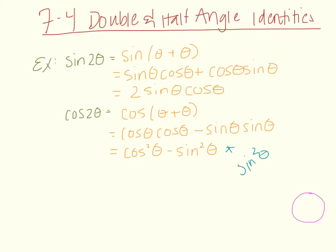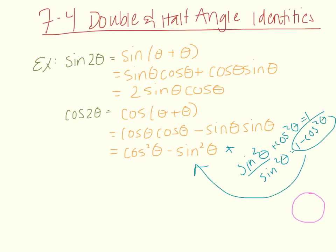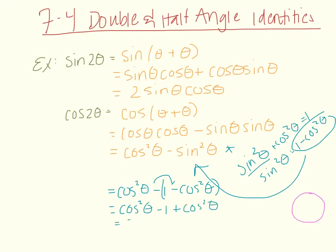Using the Pythagorean identity sine squared theta plus cosine squared theta equals one, we can solve for sine squared theta to get one minus cosine squared theta. Substituting that in for sine squared gives cosine squared theta minus (one minus cosine squared theta), which simplifies to two cosine squared theta minus one. We could also solve for cosine and substitute to get a third form, so we have three options for the cosine double angle formula.